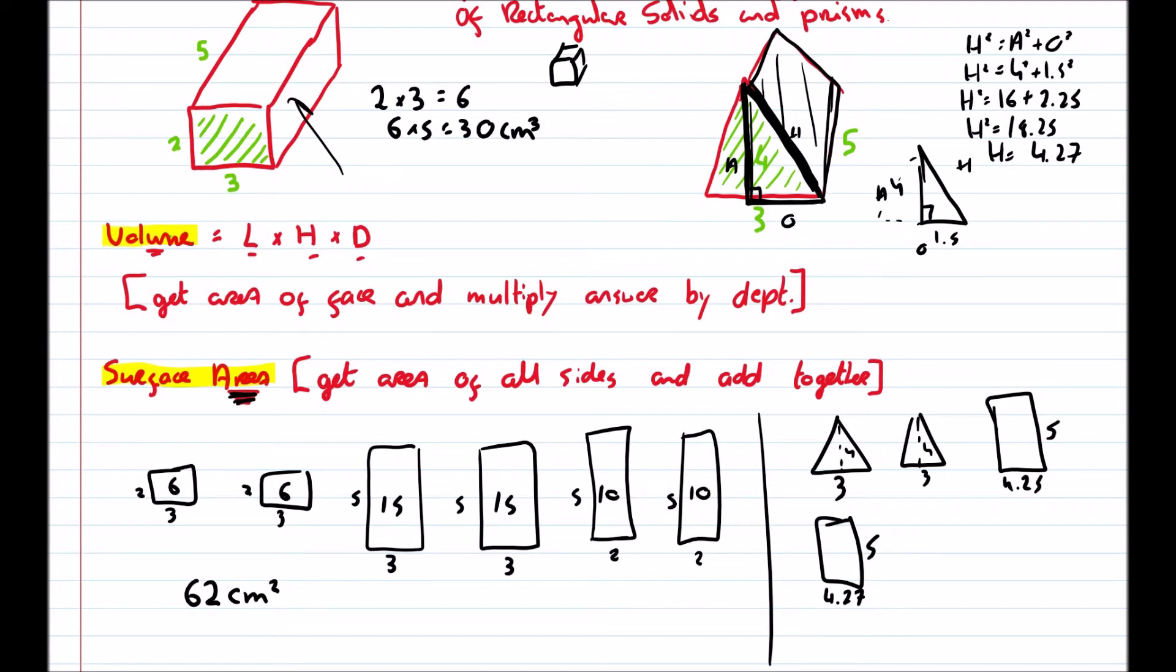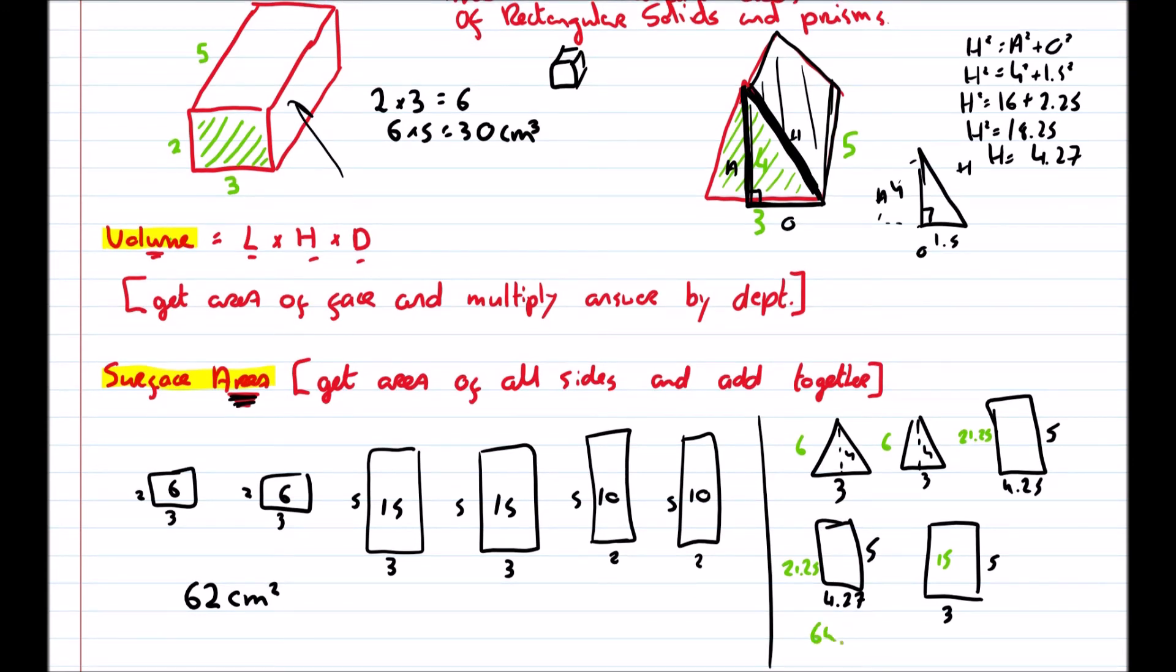And then the base will be 3 and back 5. So we get the area of all of these. And we have half base by perpendicular height. So that's 6. So that's 6. So that's 6. And that is 21.25. 21.25 again. And that's 15. And then we add them all up. And we will get 42.5. I think it's 64.75. Just make sure. So we add all those up together and we get 69.5 centimeters squared because it's surface area.